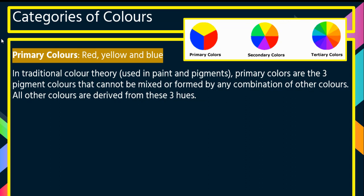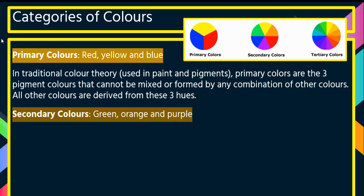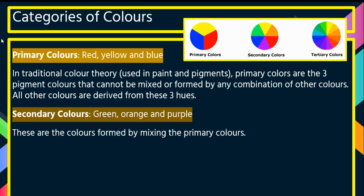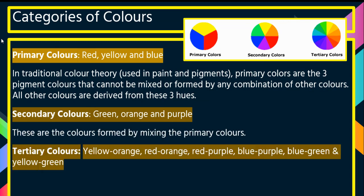Categories of colors — your primary colors are red, yellow, and blue. In traditional color theory used in paints and pigments, primary colors are the three pigment colors that cannot be mixed or formed by any combination of other colors. All other colors are derived from these three hues. You've then got your secondary colors which are green, orange, and purple — these are the colors formed by mixing the primary colors.